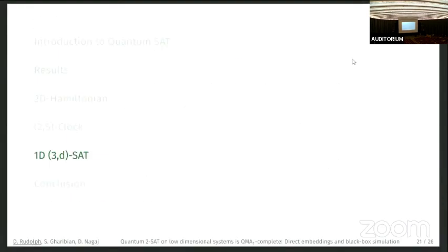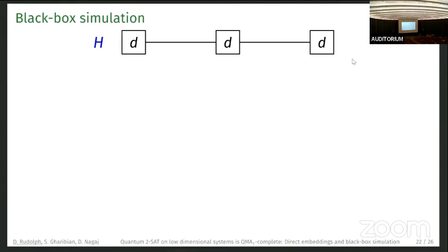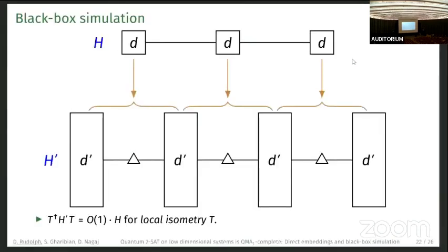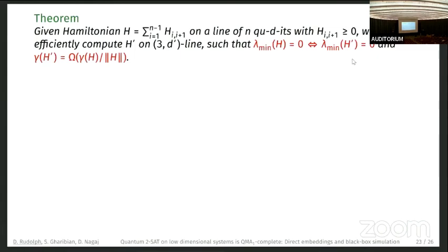Let me sketch how the 1D three-comma-d SAT works via black-box simulation. We have a qudit Hamiltonian on the line; we want an H' on a much larger d'-dimensional system. In the middle we have two qutrits, and the information of a qudit is represented by half of a qd'-system — a qutrit plus the left half of the qd'-system. These are mapped so that they are equal up to a local isometry. More formally: given a Hamiltonian on the line where each term is positive semi-definite, we efficiently compute H' on a 3-by-d'-prime line such that lambda-min of H is zero if and only if lambda-min of H' is zero, and the spectral gap is preserved.